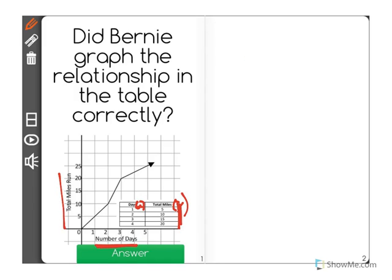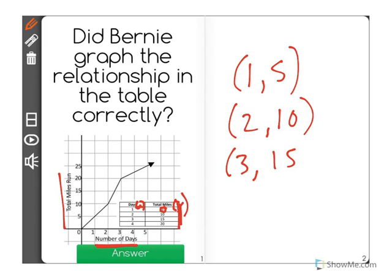So that means I have the points. x is 1, and its y value is 5. Then I have 2 and 10, 3, 15, and finally 4, 20.